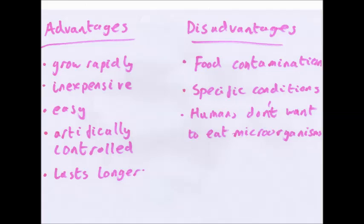Advantages to using microorganisms for food: microorganisms can grow rapidly under the right conditions, so food can be produced quickly — bacteria can reproduce once every 20 minutes. They can grow on a range of inexpensive materials, particularly waste products of other chemical processes. Their environment can be artificially controlled, so you can grow food anywhere, any time of year, in any country — controlling pH, temperature, sugar content, and so on. Also, food made using microorganisms often lasts longer in storage than the raw product — for example, cheese was first made as a way of prolonging the life of milk.